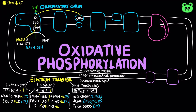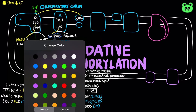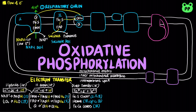Complex 2 is also known as succinate dehydrogenase. It is the only membrane-bound enzyme in the citric acid cycle, in which electrons from succinate pass through a flavoprotein with the cofactor FAD, then through several iron-sulfur centers, lastly reducing ubiquinone to ubiquinol.